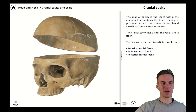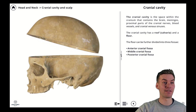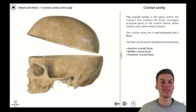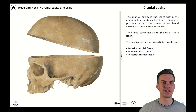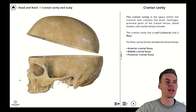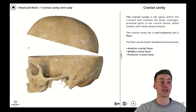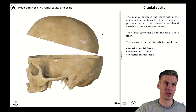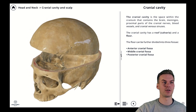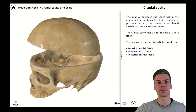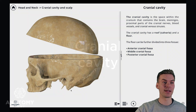In the last part of today's lecture we're going to talk about the cranial cavity, which is the space within the cranium that contains the brain, the meninges, the proximal parts of the cranial nerves, blood vessels, and cranial venous sinuses. The cranial cavity has a roof — the calvaria, which is mainly formed by the parietal bones and the squamous part of the frontal bone — and a cranial base.